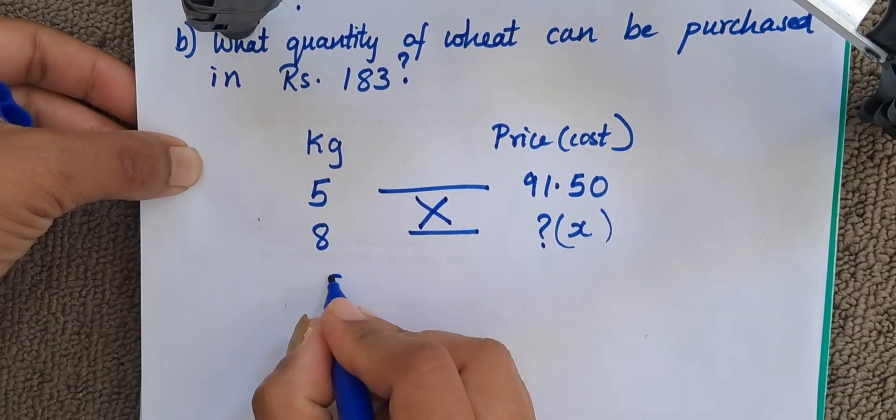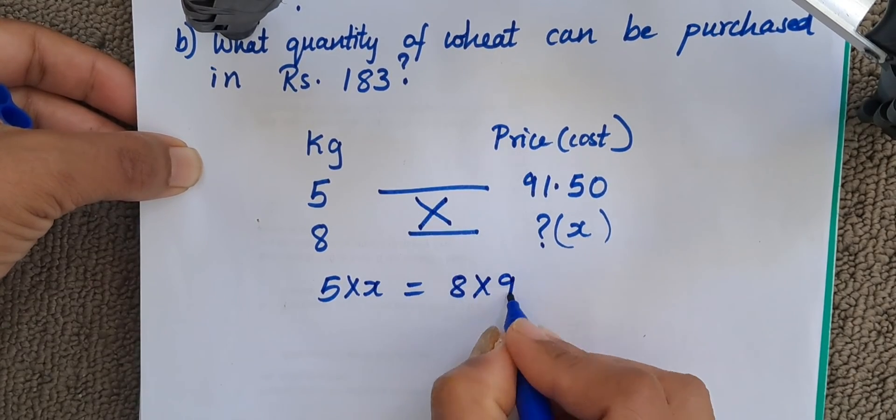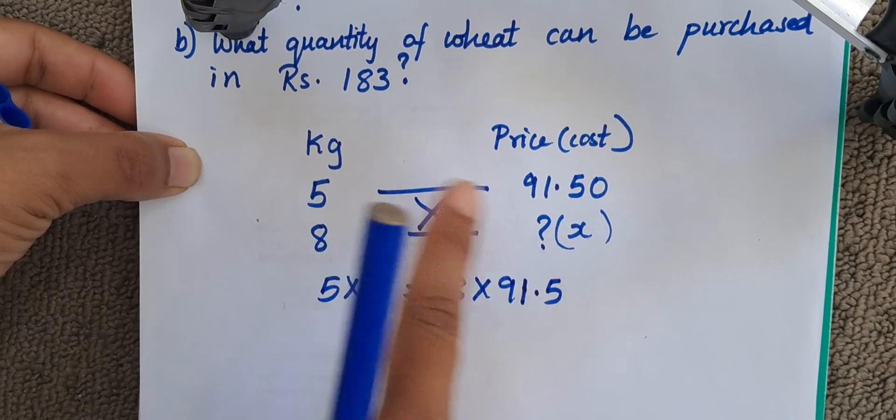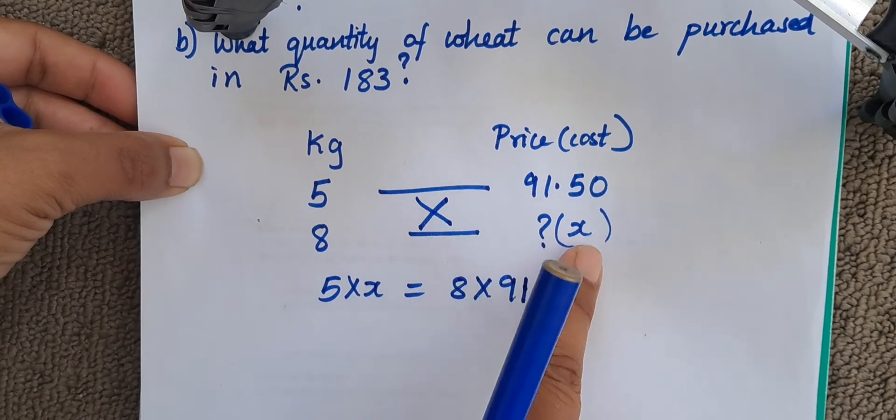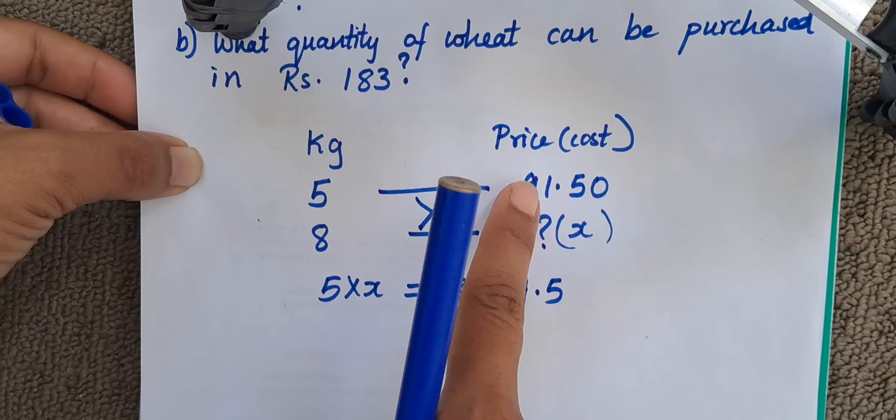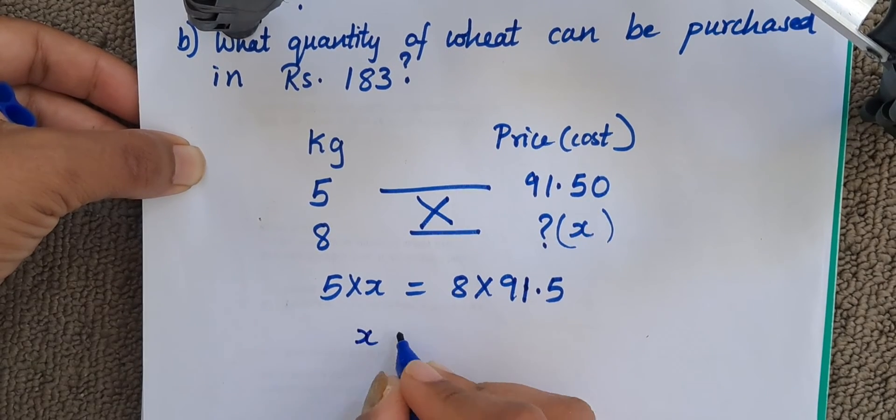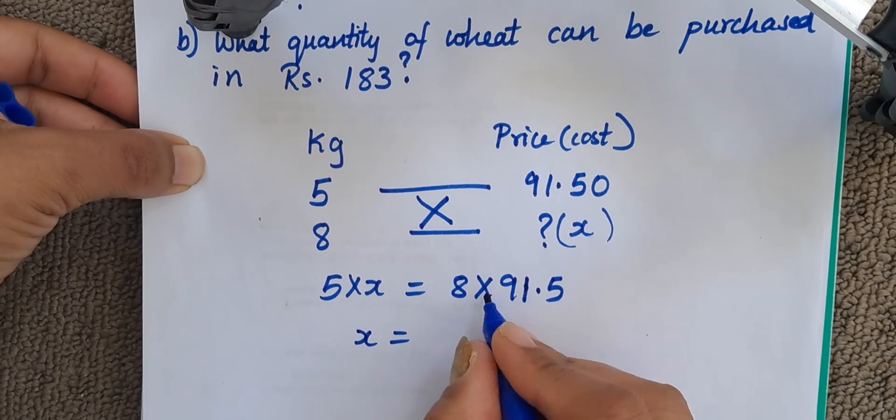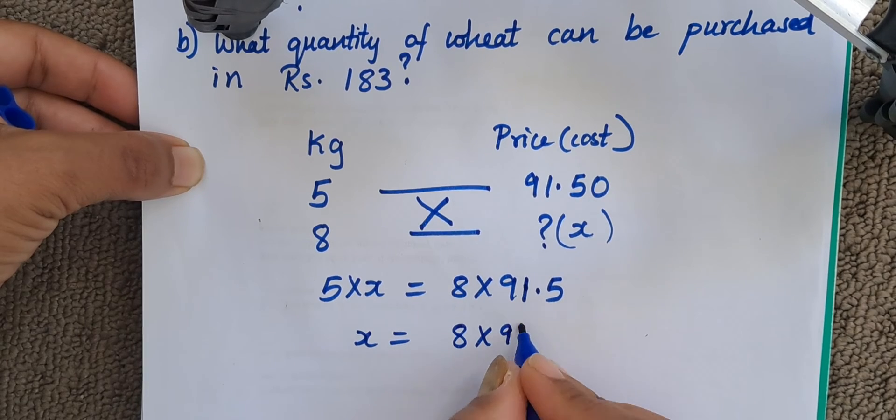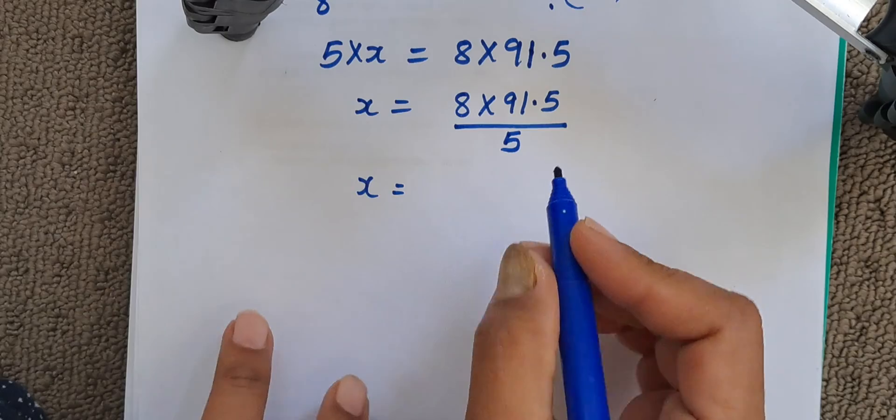That is 5 into x is equal to 8 into 91.5. So cross things get multiplied. 5 into x. This is cross multiplication. The 5 is getting multiplied with x and 8 is getting multiplied with 91.5. Now we want x, so 5 comes on the right hand side. Multiplication becomes division. So 8 into 91.5 upon 5.